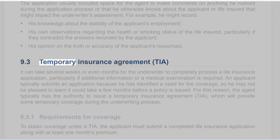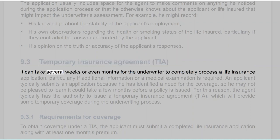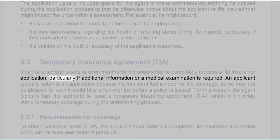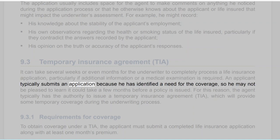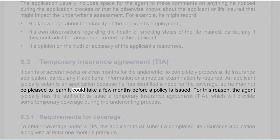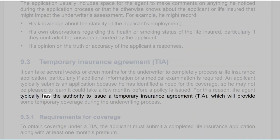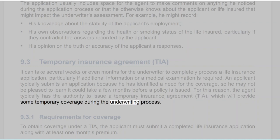Section 9.3: Temporary Insurance Agreement. It can take several weeks or even months for the underwriter to completely process a life insurance application, particularly if additional information or a medical examination is required. An applicant typically submits an application because he has identified a need for the coverage, so he may not be pleased to learn it could take a few months before a policy is issued. For this reason, the agent typically has the authority to issue a Temporary Insurance Agreement (TIA), which will provide some temporary coverage during the underwriting process.